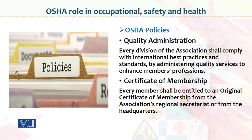Occupational Safety Health Association policies — ये आपकی policies हैं. Quality administration, certificate of membership. Quality administration کا بنیادی مقصد یہ ہے کہ جو administration ہے, اگر وو کام کرنا جانتی ہے, کام کو execute کرنا جانتی ہے, کام کو manage کرنا جانتی ہے, تو اچھے طریقے سے کام لے بھی سکتی ہے. Certificate of membership — every member shall be entitled to an original certificate of membership from the association, regional secretariat or from the headquarter.